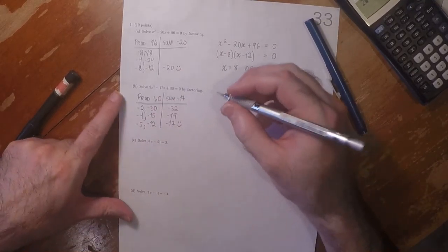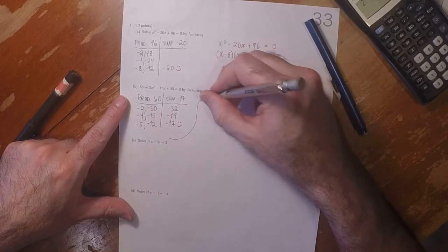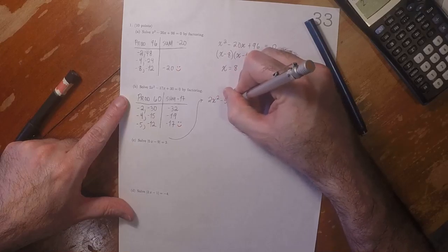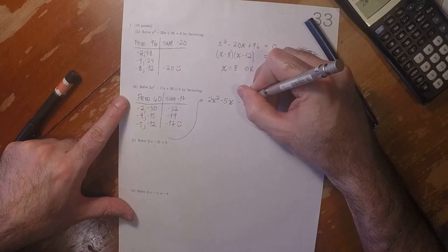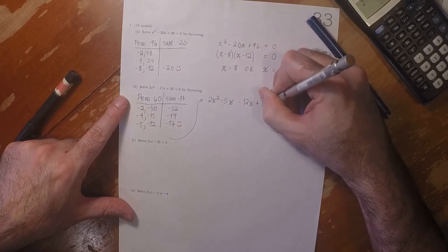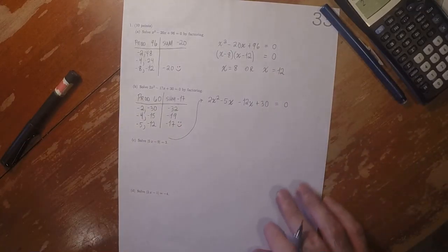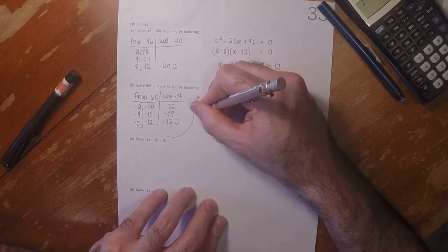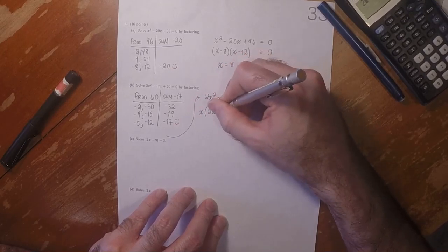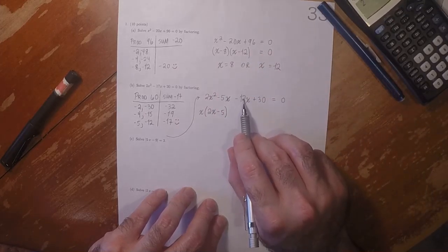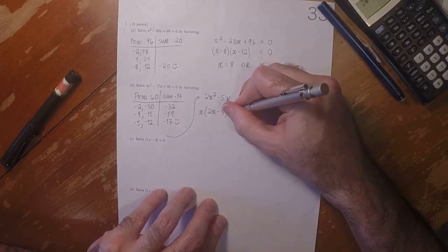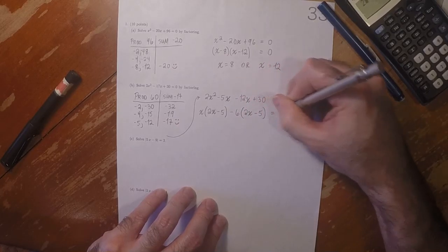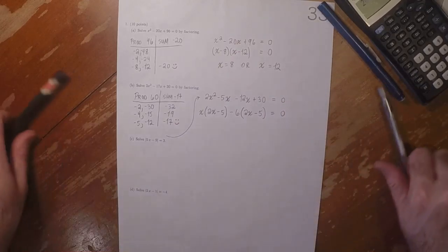These two numbers tell us how to split that negative 17. So we split it as 2x² minus 5x minus 12x plus 30 equals 0. Then we factor out the greatest common factor of each group: x times 2x minus 5, and then 6 times 2x minus 5, equals 0.